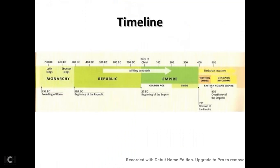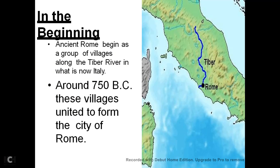This is the timeline. In this chapter we will cover first the Monarchy, then the Republic, then the Empire, and finally the downfall of this Empire. In the beginning, ancient Rome began as a group of villages along the Tiber River. Here in this map you see the map of Italy, and here you see the river Tiber. Along the Tiber River, that is now in Italy, around 750 BC, these villages united to form the city of Rome.